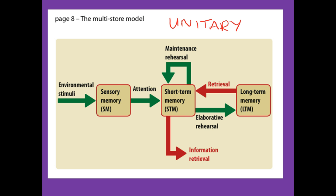You can see that we've got three stores. Each of those stores is what we call unitary — that means it can't be subdivided; it's one store, whole and in and of itself. This is a serious weakness to this model, as we shall see later. Let's look at how this model may work with an example: say you meet somebody in a nightclub and you want to remember their telephone number.